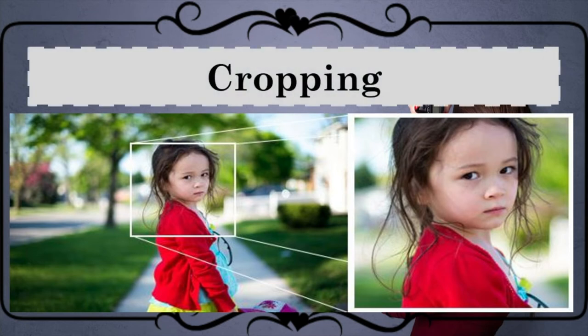Next, cropping. Cropping is the removal of unwanted outer areas from a photograph or illustrated image. It is used to magnify the primary subject and further reduce the angle of view.